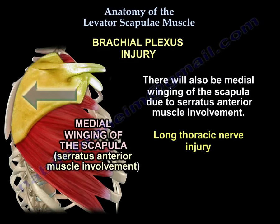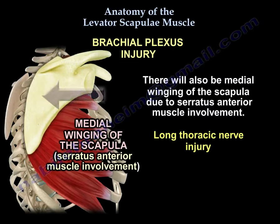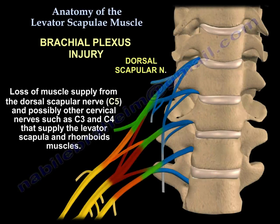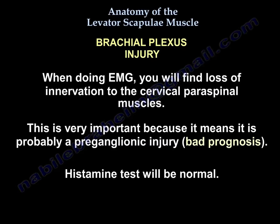You will also have medial winging of the scapula due to serratus anterior involvement. You will have loss of muscle supply from the dorsal scapular nerve, which is C5, and probably other cervical nerves like C3 and C4 that supply the levator scapulae and rhomboids. So when you do EMG, you will find loss of innervation to the cervical paraspinal — that is very important, as it means it's probably a pre-ganglionic injury.